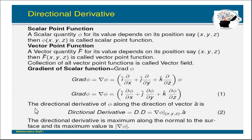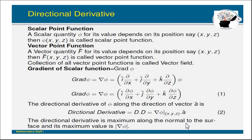The most important concept is the directional derivative of phi along the direction of vector a-bar, given by the formula: directional derivative (DD) equals del phi at point (x, y, z) dot a-cap. This gives the directional derivative of phi along the vector a-bar. The directional derivative is maximum along the normal to the surface, and its maximum value is |del phi|.